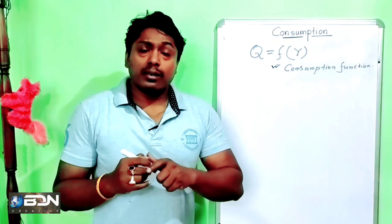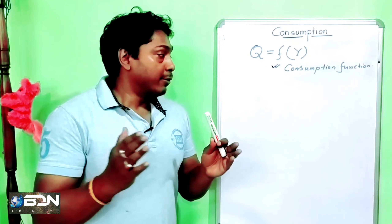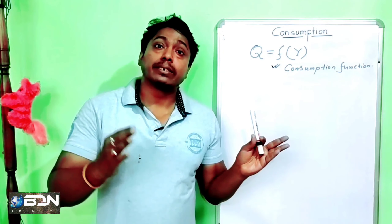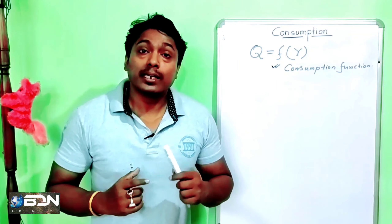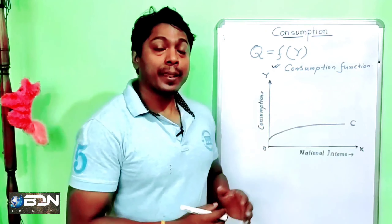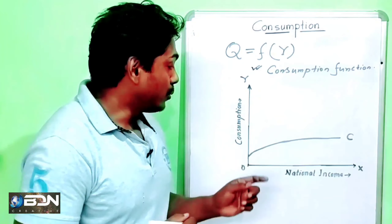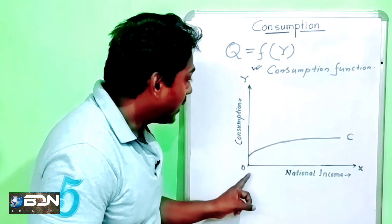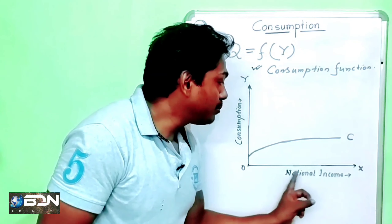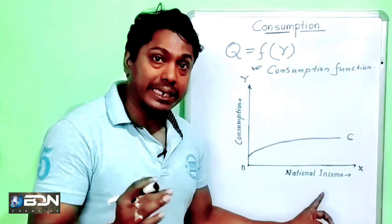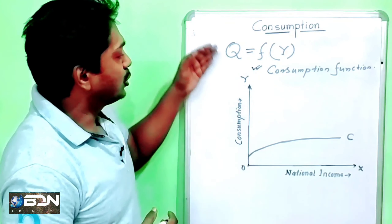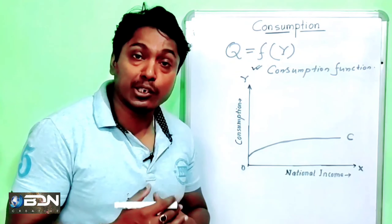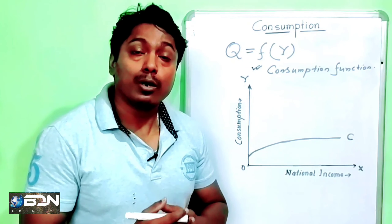So, consumption function can be defined as the relationship between aggregate consumption and disposable income of the country. The relationship is direct: when income is high, consumption is high; when income is low, consumption is low.